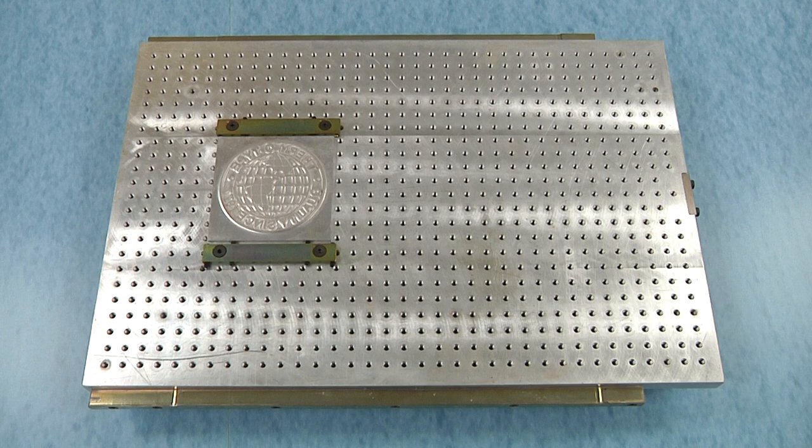After the die has been positioned and secured to the chase using bunter or better posts and the first production order has been successfully run on the press, the operator should follow these steps.